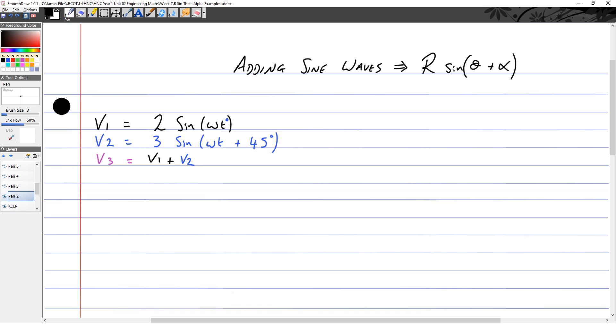V3 is equal to V1 plus V2, and we're going to express V3 in the form of R sin(ωt + α).